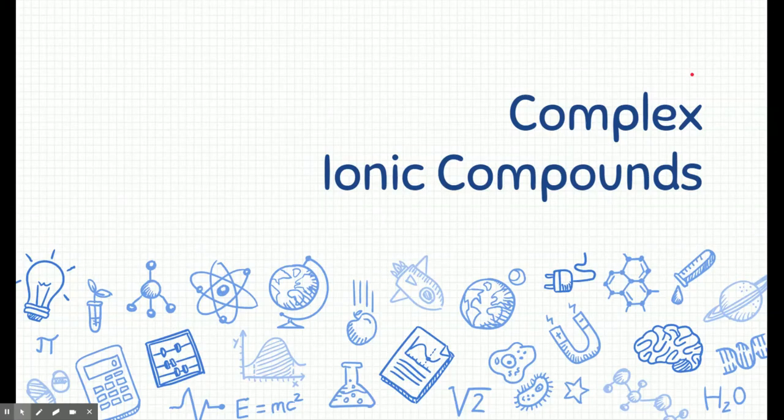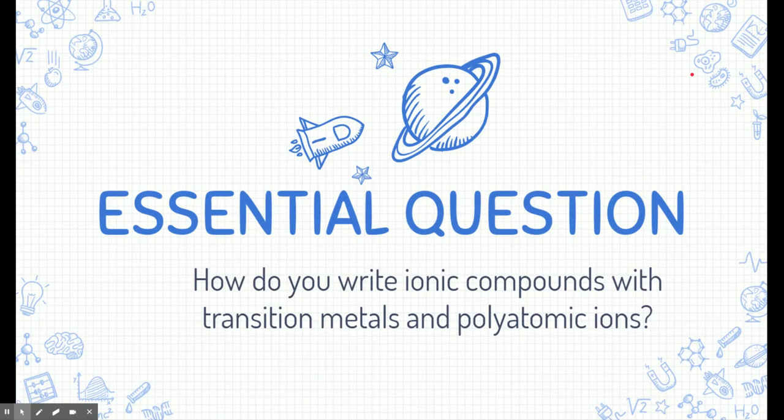Let's talk about complex ionic compounds. This is a continuation from the last module where we learned about simple ionic compounds. Let's get started with the notes. Please pull out your notebook or piece of paper and write this essential question at the top: How do you write ionic compounds with transition metals and polyatomic ions?